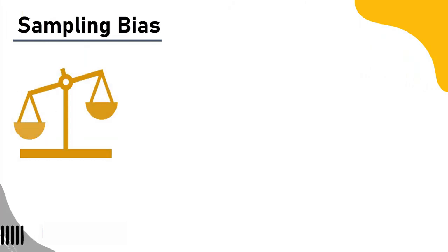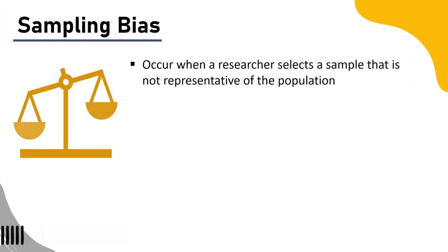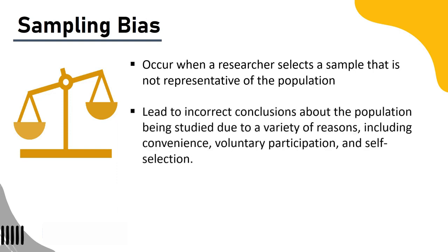When conducting research, it's important to be aware of sampling bias. This is a type of error that can occur when a researcher selects a sample that is not representative of the population, leading to incorrect conclusions about the population being studied. This can happen for a variety of reasons including convenience, voluntary participation, and self-selection.